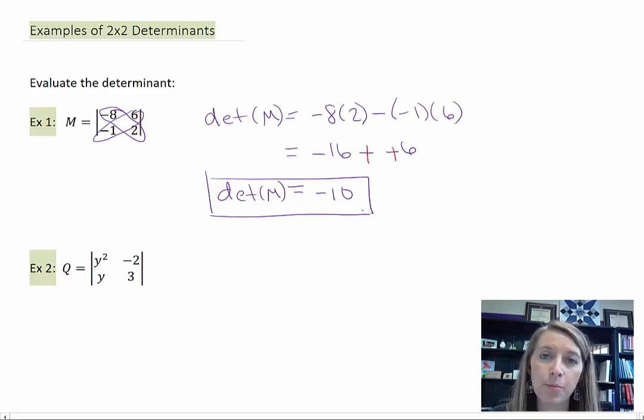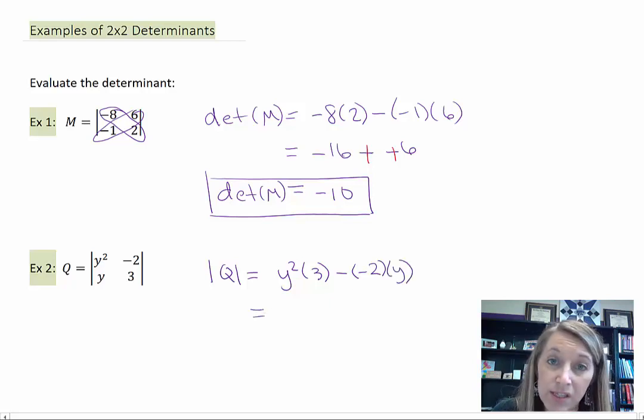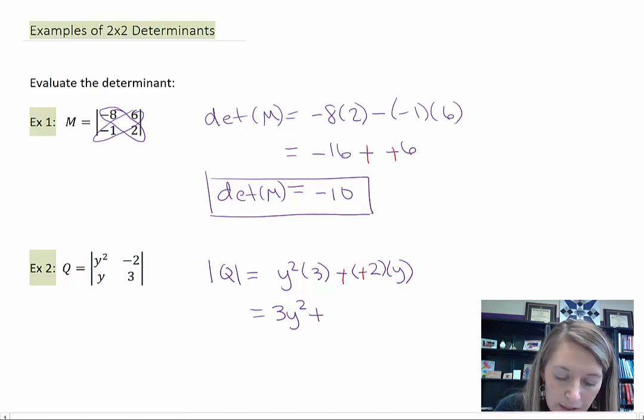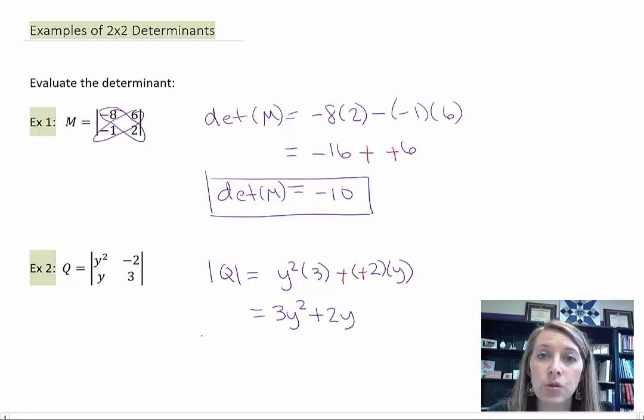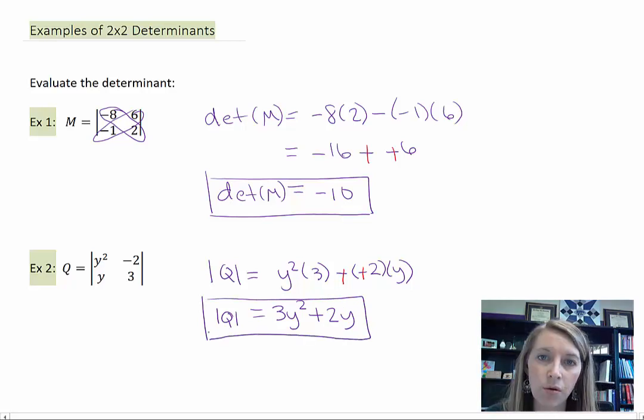In this example, it may seem more complicated because we don't all have just numerical values, but the process is exactly the same. The determinant of Q is Y squared times 3 minus negative 2 times Y. If we simplify this, that gives us 3Y squared. Watch those double negatives. Minus a negative becomes positive, so plus 2Y. You can't actually simplify this because they're not like terms. You could factor out a Y, but that's not really going to gain us any ground here. So we might as well just quit while we're ahead and say the determinant of Q is 3Y squared plus 2Y.